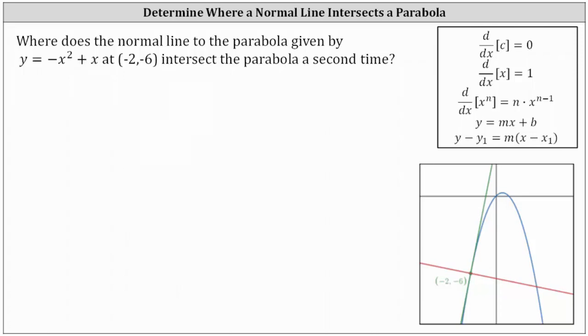Where does the normal line to the parabola given by y equals negative x squared plus x at the point negative two comma negative six intersect the parabola a second time?